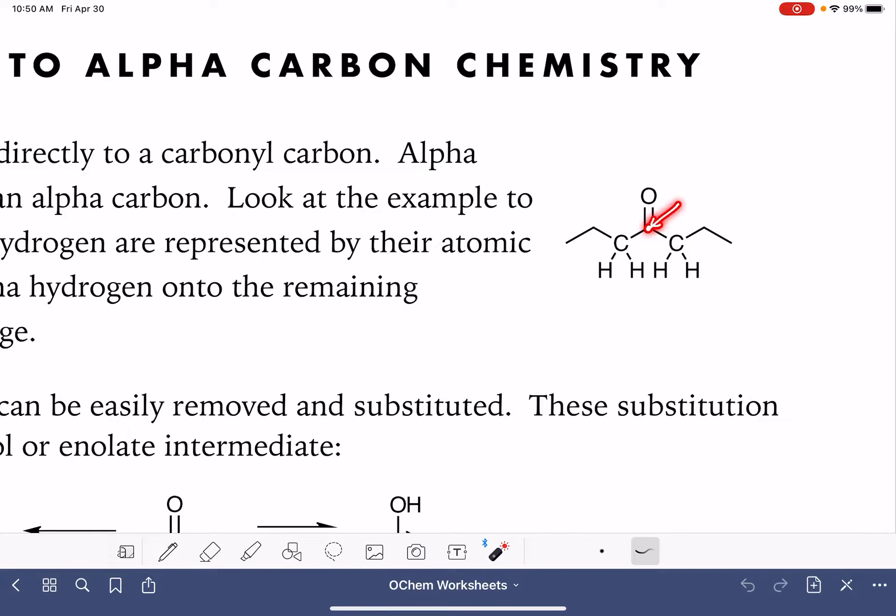So instead of calling this carbon number one or carbon number alpha, we start numbering right here. And this particular carbon would essentially be zero. So this is the alpha position in the carbon chain. It has two, and these, therefore, are the alpha carbons.